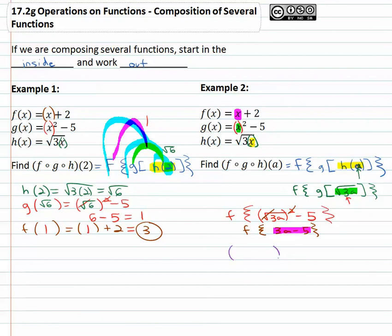So x plus 2, stuff plus 2, that stuff is 3a minus 5. Simplifying, combining like terms, 3a minus 3 becomes our final solution.